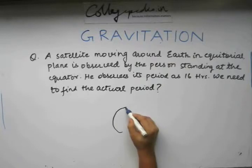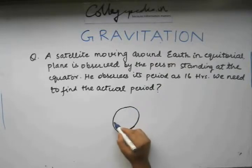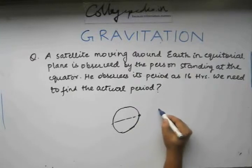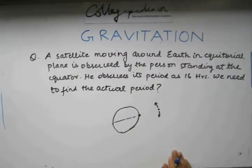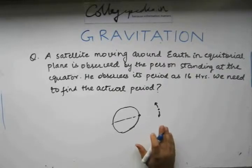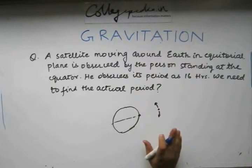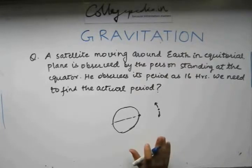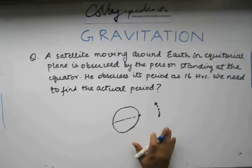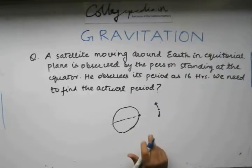When a man is standing at the equator and looking at a satellite in the equatorial plane, the satellite could possibly be going in this direction or in this direction. In either of the cases, what really is going to matter to us is the relative omega of the satellite with respect to the planet. That is the basic determining factor of this problem. If we are able to figure that out in terms of the given quantity, we can find the actual time period of the satellite and also determine which sense of rotation it has.